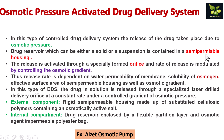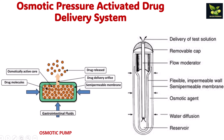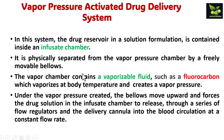Next is osmotic pressure activated drug release system. The drug reservoir has a semi-permeable membrane, and due to this the osmotic pressure is obtained and the rate of release is modulated by controlling the osmotic gradient. There are two components: an external component which is a rigid semi-permeable housing made of substituted cellulosic polymers containing an osmotically active salt, and an internal compartment which is a drug reservoir enclosed by a flexible partition layer and an osmotic agent impermeable polyester bag. An example is the Alzet osmotic pump.